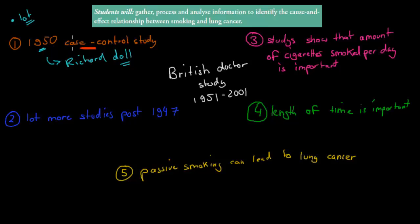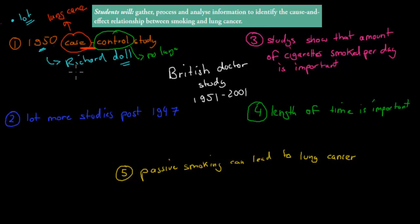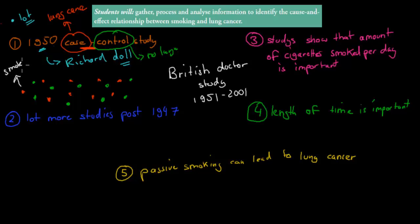A case control study has case participants — in this case, people who have lung cancer — and control participants who have no lung cancer. He conducted this experiment in his hospital, where he was director. He looked at people who had lung cancer as the cases, and patients without lung cancer as controls. He found that a common habit among the lung cancer patients was smoking, whereas many without lung cancer were non-smokers.